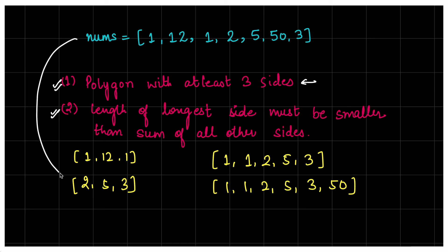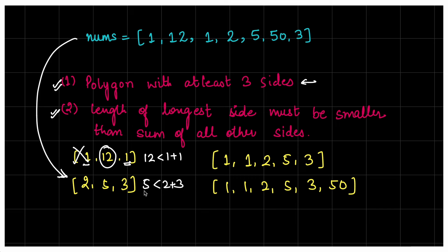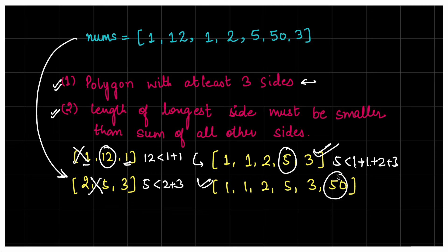Let's check some examples. For sides {1, 1, 12}: the largest side is 12, is 12 < 1+1? No — polygon not possible. For {2, 5, 3}: largest side is 5, is 5 < 2+3? No, it must be strictly less — not possible. For {1, 1, 2, 3, 5}: largest is 5, is 5 < 1+1+2+3 = 7? Yes — polygon possible! For a set including 50: 50 is clearly not smaller than the sum of others — not possible.